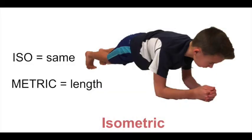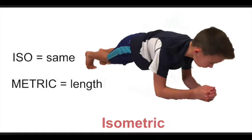For isometric, iso means same and metric means length. For example, during a plank exercise your muscles are generating plenty of force, but they're not shortening or lengthening — they're staying the same length.